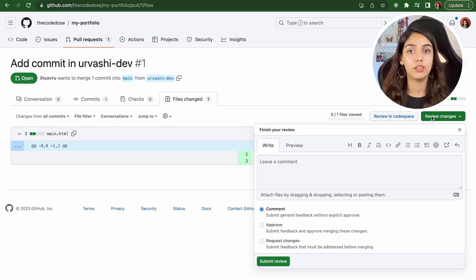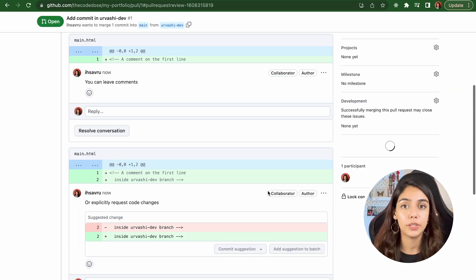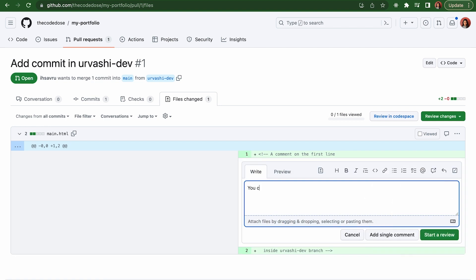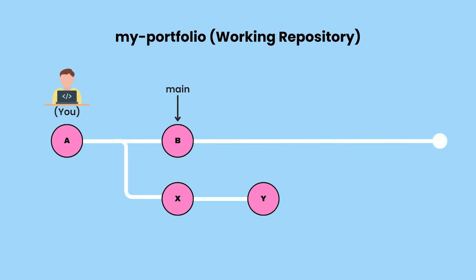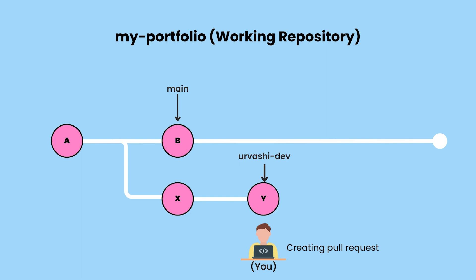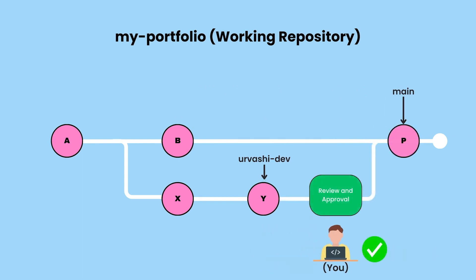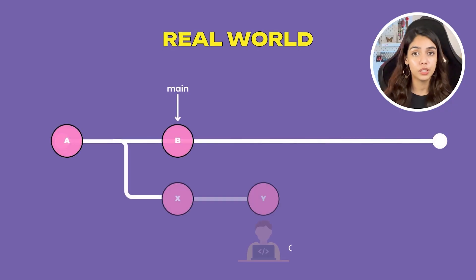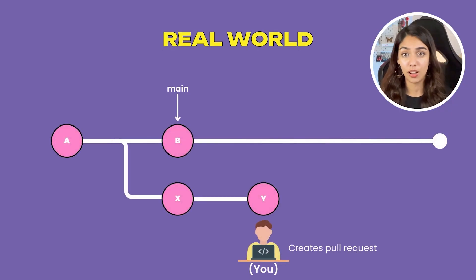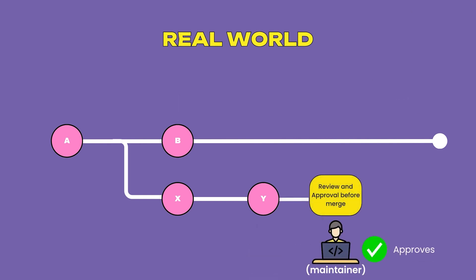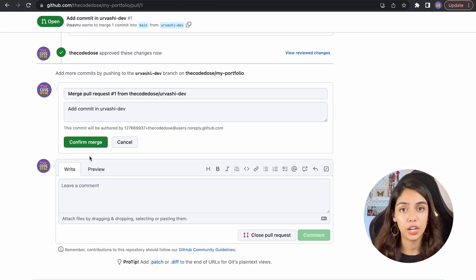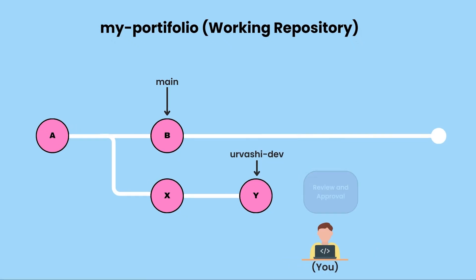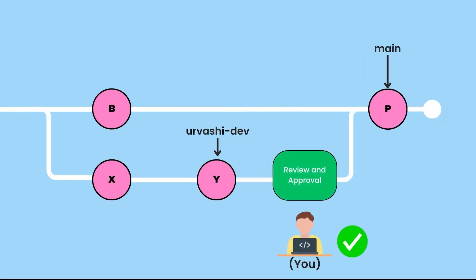To approve a pull request, click on the Review Changes button and hit Approve. You can optionally leave a comment with your approval. In this case, since you are the only person working in this repository, you are both the creator and the approver of the pull request. In the real world, the person who creates the pull request is not the one who reviews it — someone else needs to review it. Once approved, scroll to the bottom and merge the pull request into main.